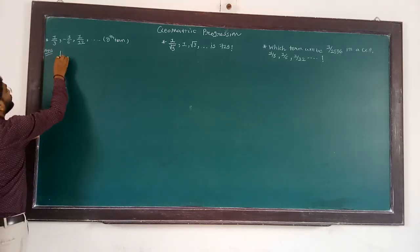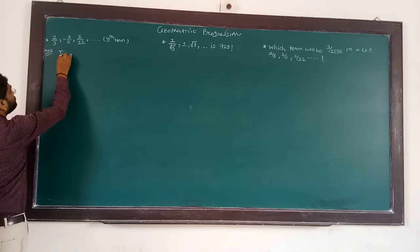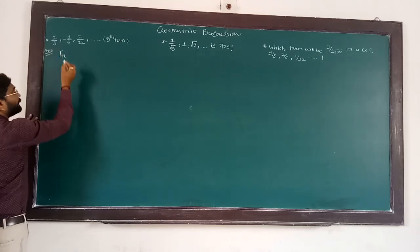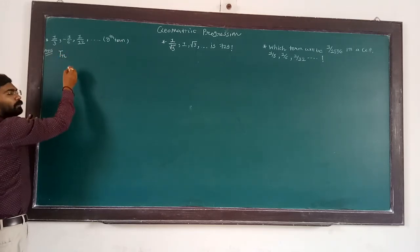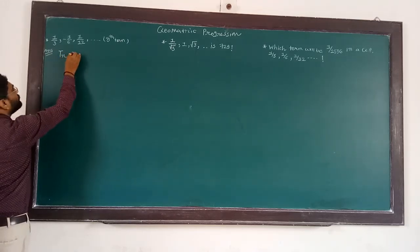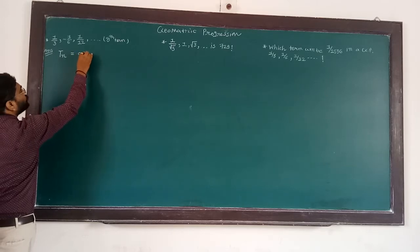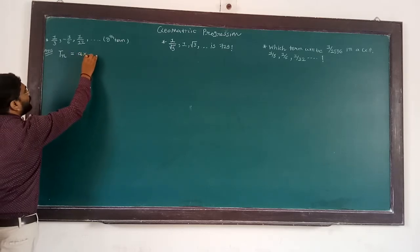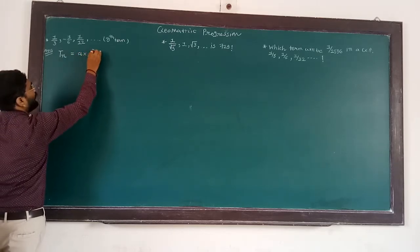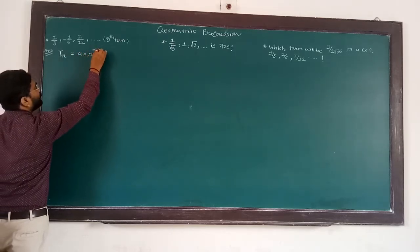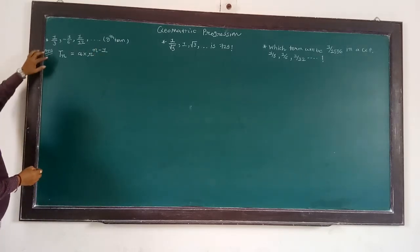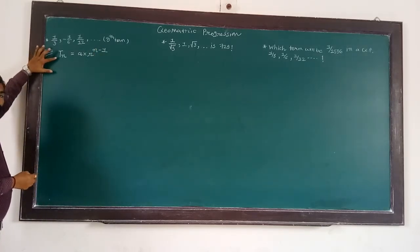First of all, we find the nth term. The formula for the nth term is: T_N is equal to A into R to the power N minus 1.